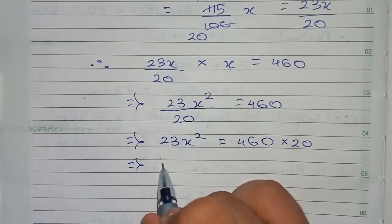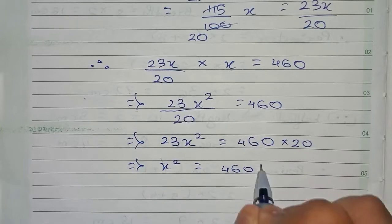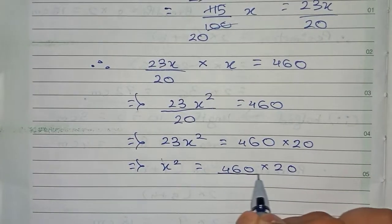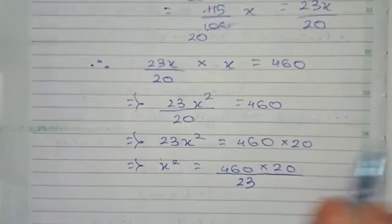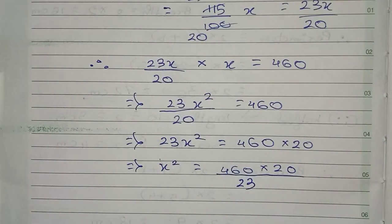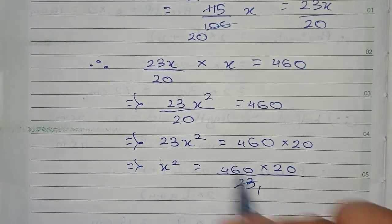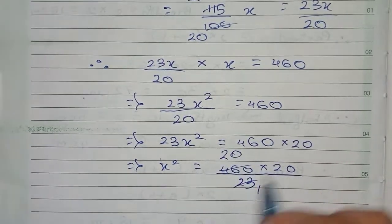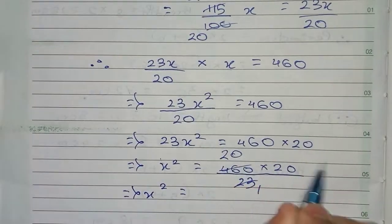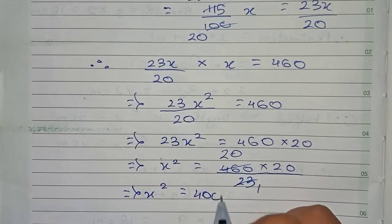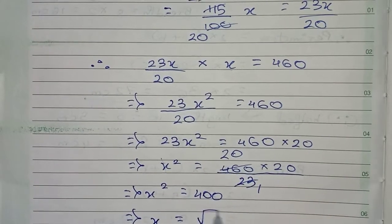So x squared equals 460 into 20 by 23. We cancel 23 and 460: 460 divided by 23 gives 20. So x squared equals 20 into 20, which is 400. Therefore x equals root over 400, which gives us 20 centimeters.